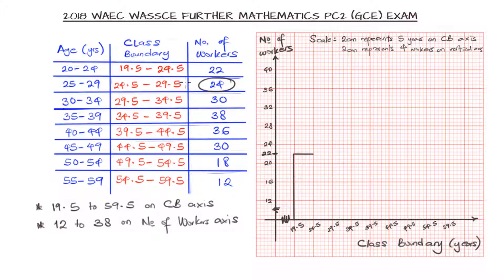In the next case, we are having 24 as the number of workers, then taking the value from 24.5 to 29.5. Then the next one, we are having 30, and we can just plot the class boundary for 30 is 29.5 to 34.5. And then the next entry is for the 38 number of workers, and their class boundary is 34.5 to 39.5. Then next we have 36 and 39.5 to 44.5, which is as shown.